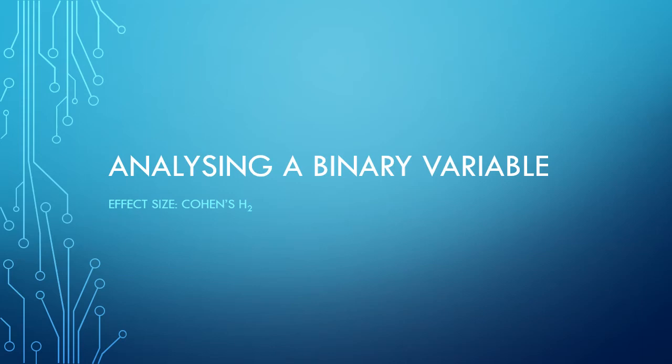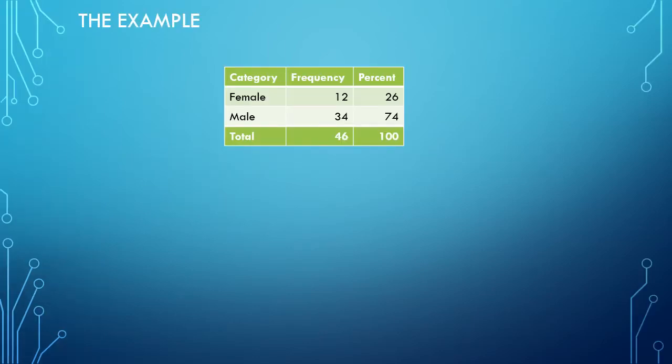Welcome to analyzing a binary variable. This step, we'll look at effect size, and in this particular case, Cohen's H2. The example I've been using for analyzing a binary variable was where people only selected between male and female in an older survey.